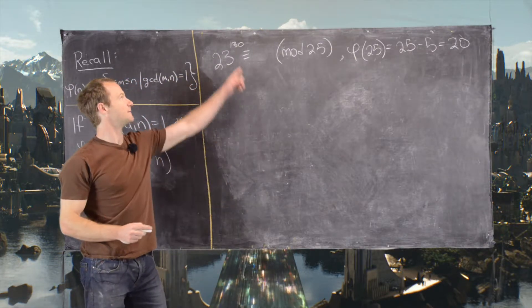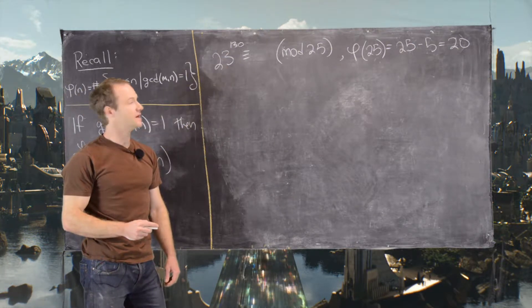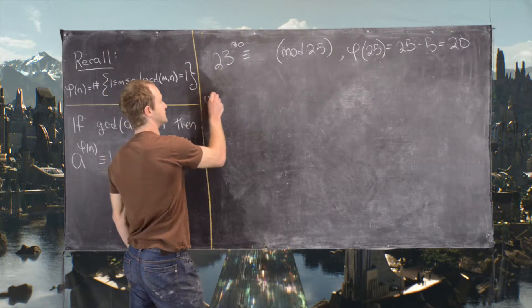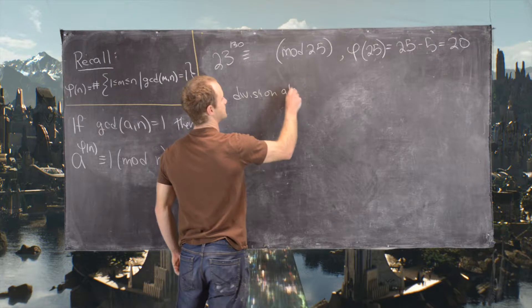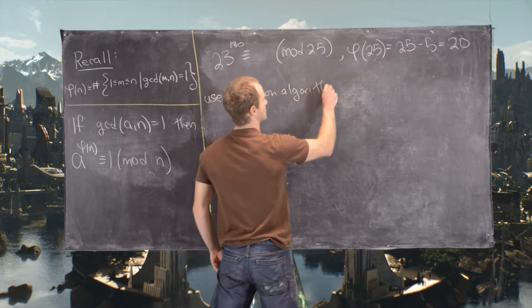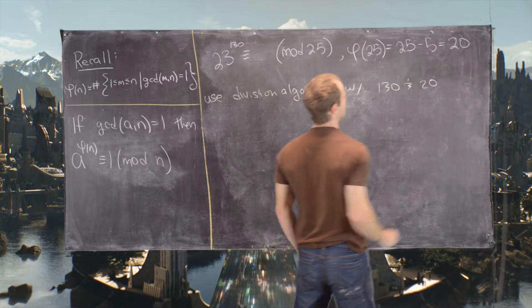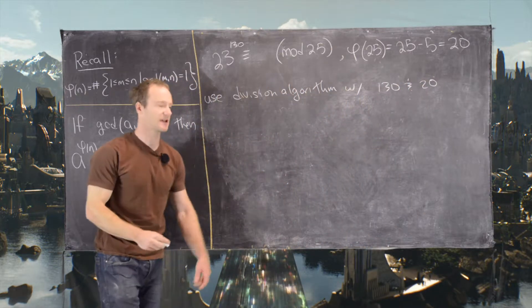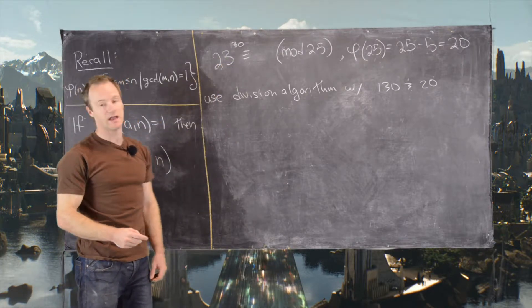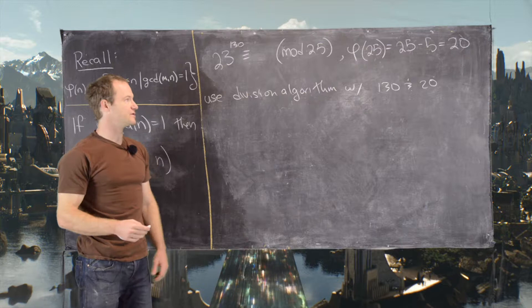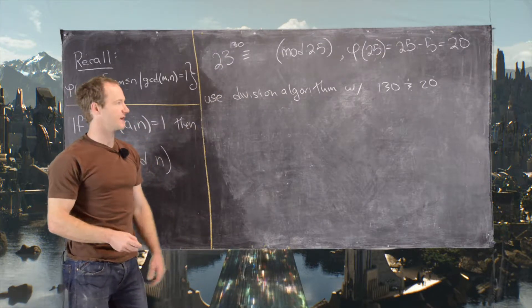So that is phi of 20. Now notice we have 130, which is not a multiple of 20. So we need to use the division algorithm, and that's what we will do. So we'll use division algorithm with 130 and 20. And this is the general strategy. If you're trying to reduce a power of something modulo n, you probably want to use the division algorithm with that exponent and whatever phi of n is.